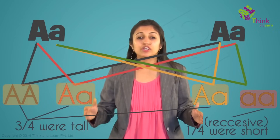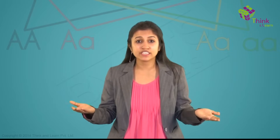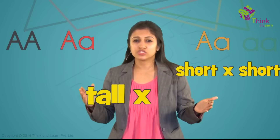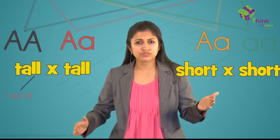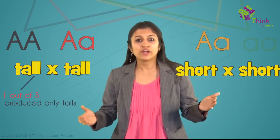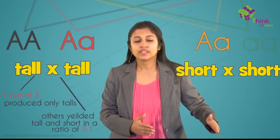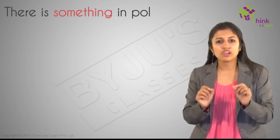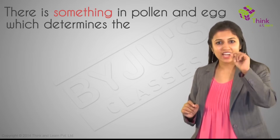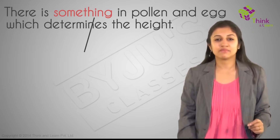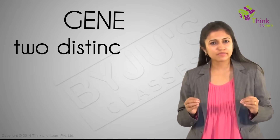Then came the complication — what if you cross two hybrids? When hybrids were self-fertilized, about one-fourth of their offspring were short. The recessive trait appeared, and the other three-fourths were tall. When he further continued self-fertilization — shorts with shorts and talls with talls — about one tall out of three produced only talls, while the others yielded both talls and shorts in a ratio of 3 to 1. The shorts bred only shorts. His interpretation: there is something in the pollen and the egg that determines the height of the pea plants. This something is called a gene.